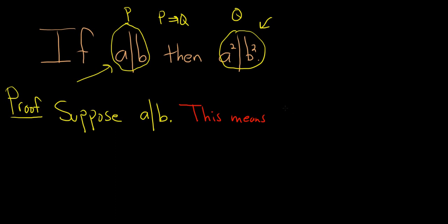For a to divide b, this means that b is a multiple of a. So it means that b is equal to k times a, where k is an integer. So you write down your hypothesis, and then you write down what it means. And so now we have to think about where we're going. We're trying to show that q is true.